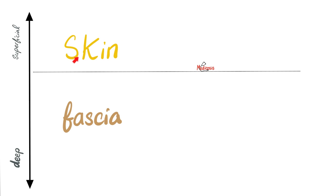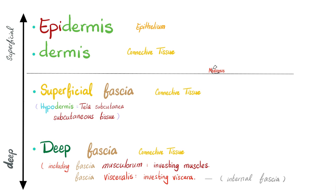So from superficial to deep: skin, followed by fascia. The skin is epidermis and dermis. The fascia is superficial and deep. Superficial fascia is synonymous with hypodermis, tela subcutanea, or subcutaneous tissue. Then you have the deep fascia, which includes the fascia that surrounds muscles — fascia musculorum — and the fascia that invests viscera — fascia visceralis. In old books, fascia visceralis was known as internal fascia, which is even deeper than the deep fascia.